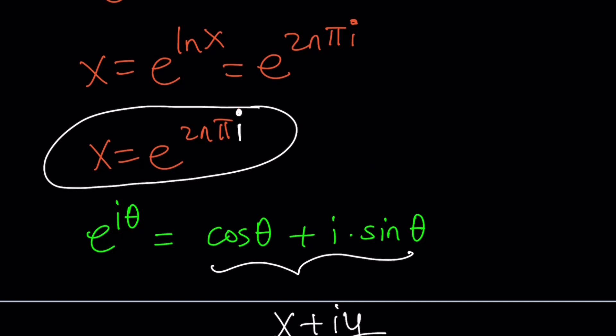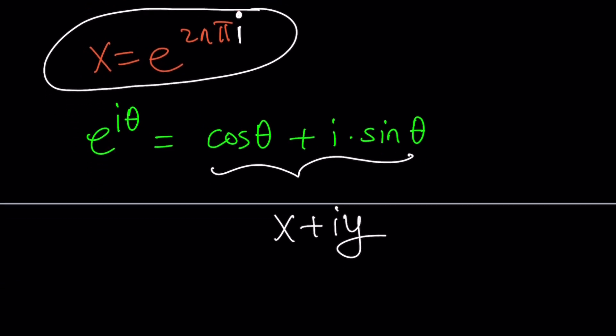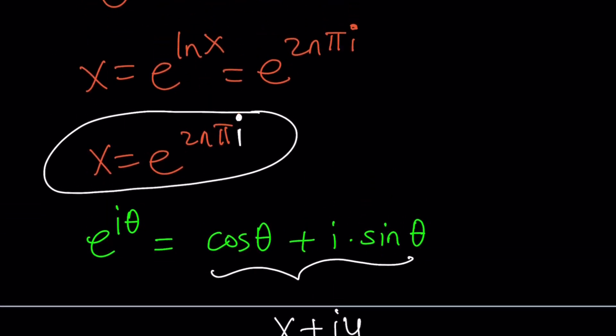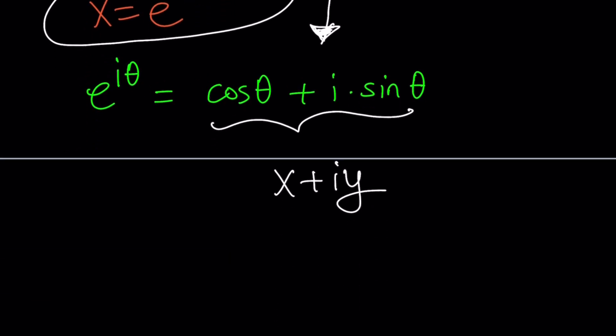By the way, I'm assuming that the modulus is 1 in this case, which is the case, by the way. Because for my x, there's nothing in front of e to the power something. So the modulus is 1. But if I had something like this, 2nπi plus some, I don't know, k, then obviously you would have e to the k as our modulus. That's a different story. But in this case, k is 0. Make sense? So e to the 0 is 1, which means the modulus for my number is 1.